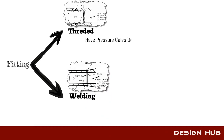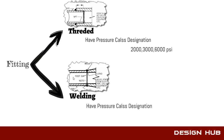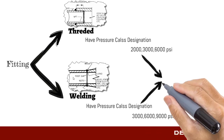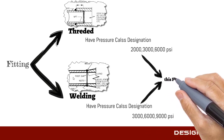Threaded fitting pressure class range is 2000, 3000, and 6000 psi. Welded fitting pressure class range is from 3000 to 9000 psi. This pressure range is based on the schedule and thickness of the pipe.